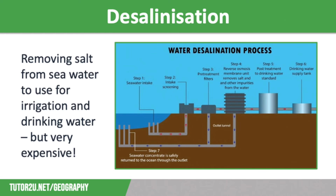Next is mineralisation, where desalinated water has minerals added to meet government drinking water guidelines and health requirements. This is followed by storage, where drinking water is held before distribution into regional water networks. Finally, concentrated seawater is returned to the ocean through diffusers, where it is diluted by ocean currents. You can see the full process illustrated on screen.